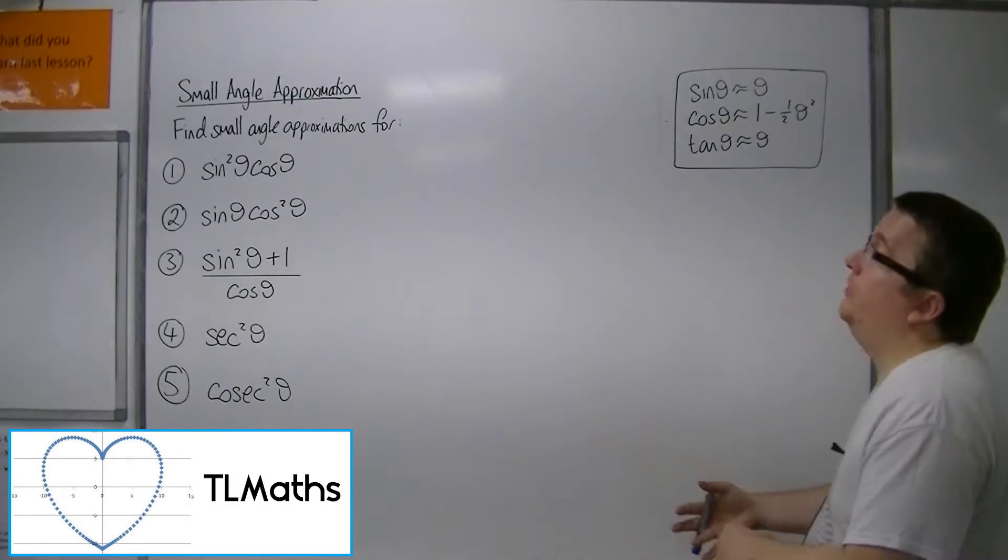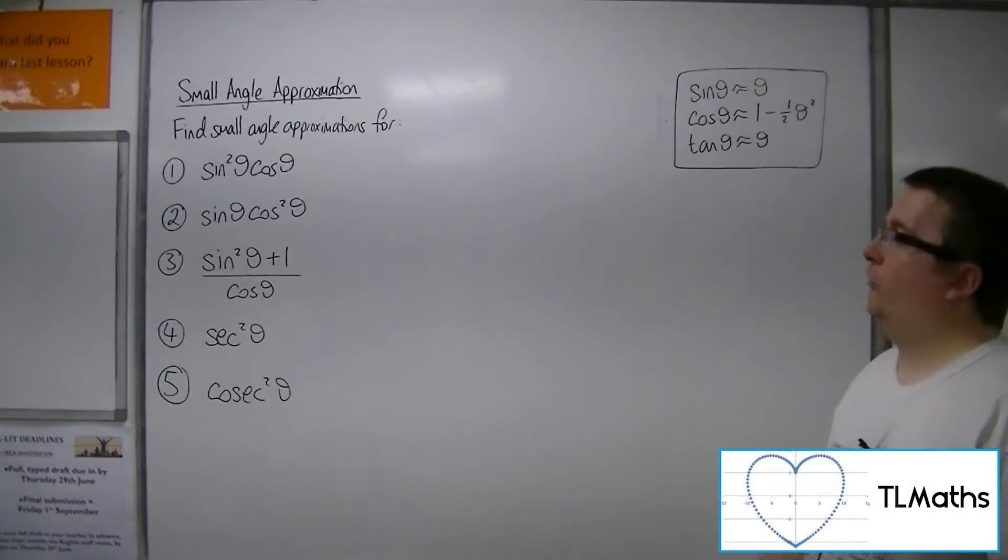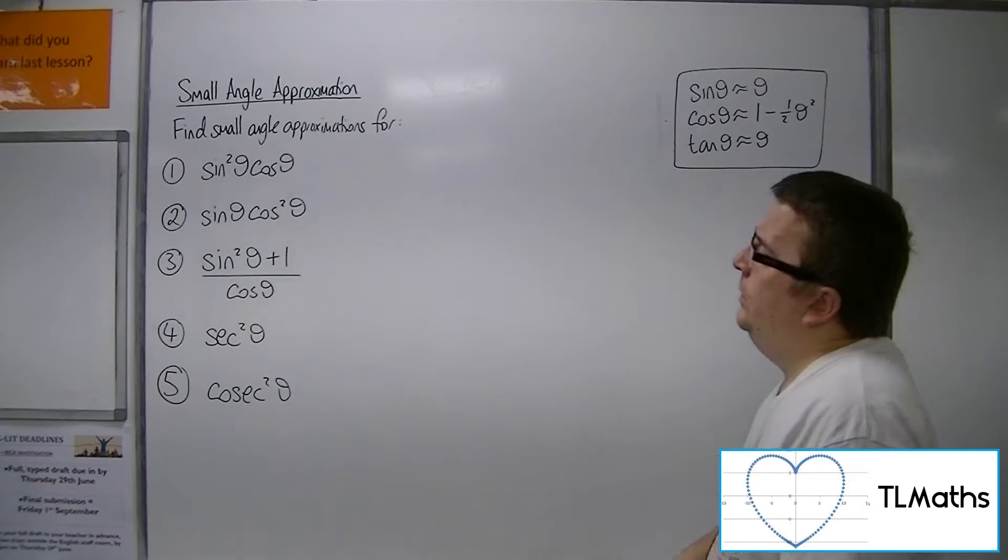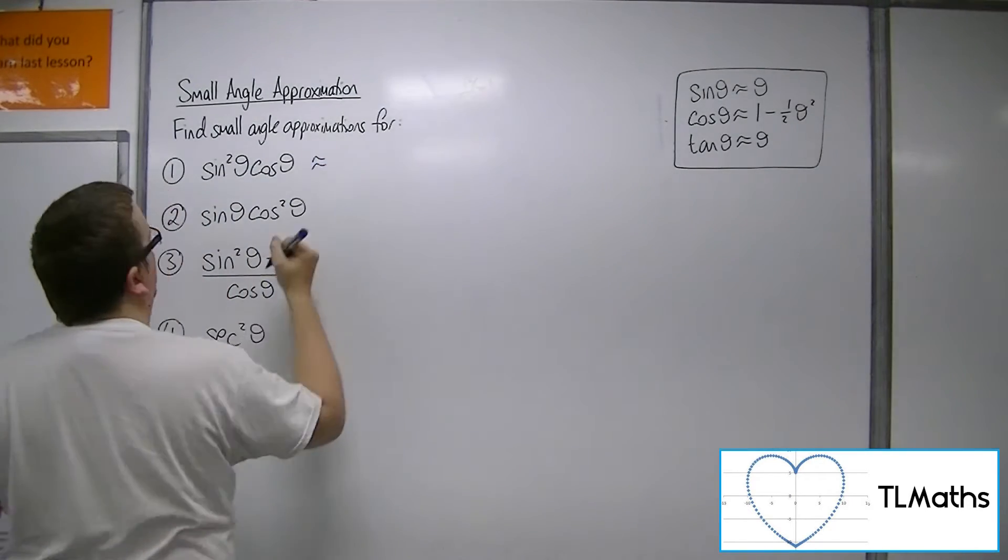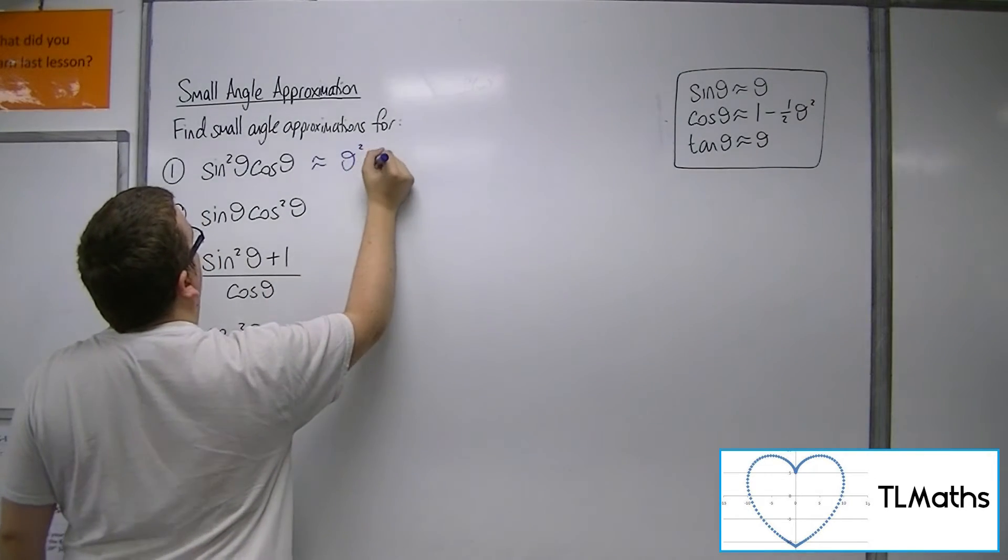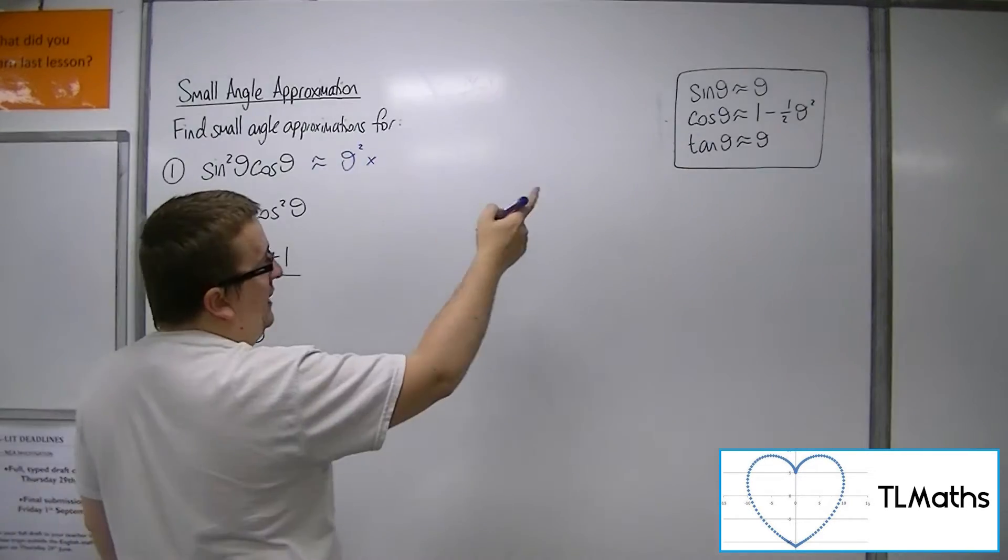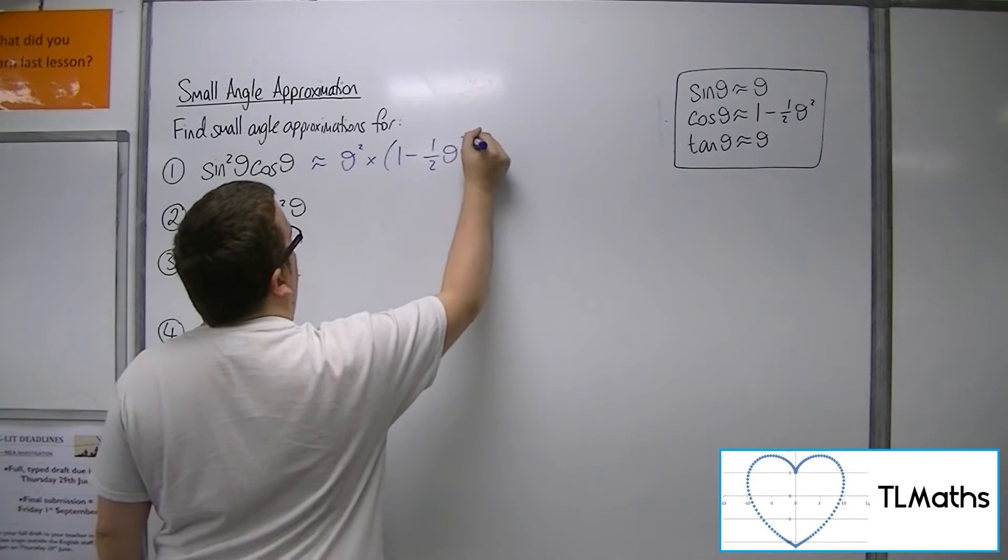OK, so let's say I want to find small angle approximations for each of these expressions. So sine squared theta cos theta, sine squared, well sine theta is theta, so we'd have theta squared times by cos theta, which is 1 minus 1 half theta squared.